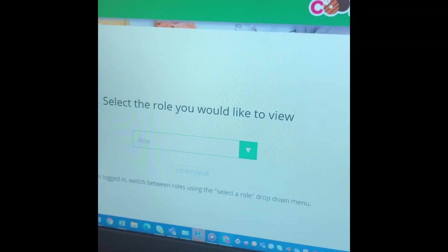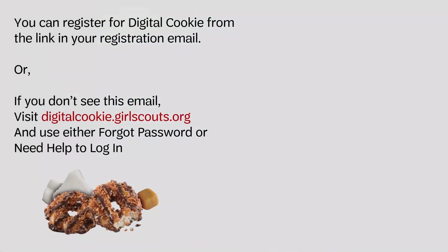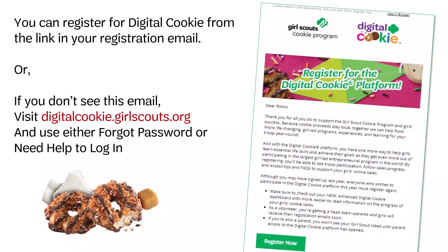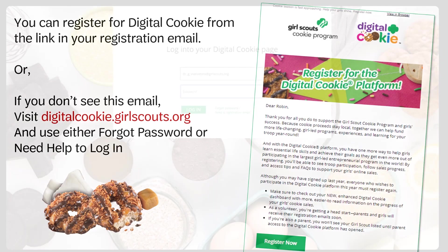Before getting started, you need to ask for your parents' permission to go online. You'll also need their help because the cookie registration is tied to their email. Now that you have their permission, you can either use the email that was sent to them or just simply go to digitalcookie.girlscout.org.